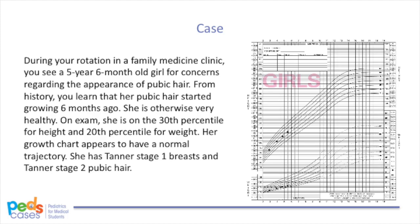In part one of our series, we were introduced to a five-year, six-month-old girl seen for concerns regarding the growth of pubic hair that started six months ago. We observed that this girl is showing isolated growth of pubic hair with no breast development, so we deemed that she's not going through true puberty. But what could be the potential causes for isolated pubarche? Is five years of age too young to have Tanner stage 2 pubic hair?